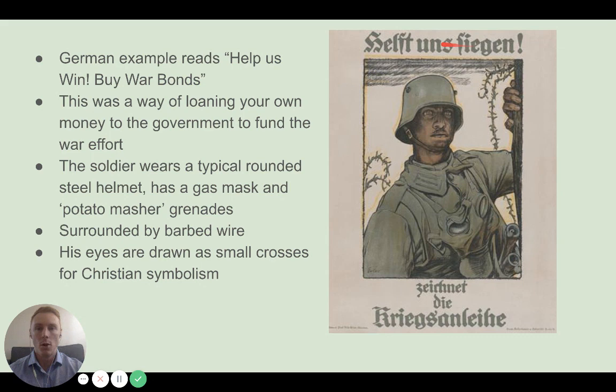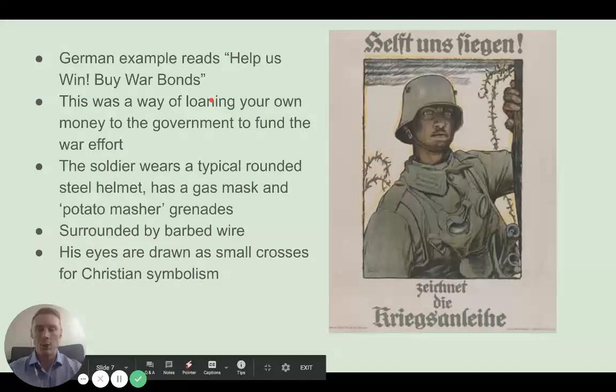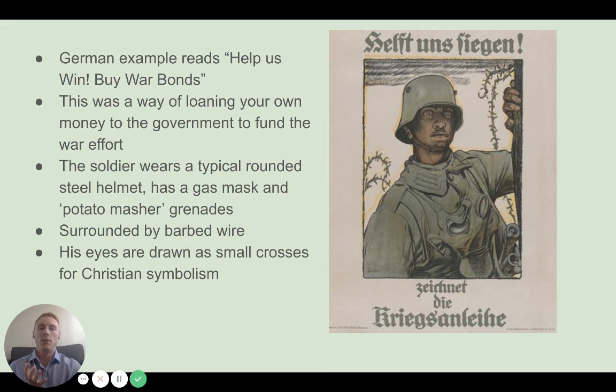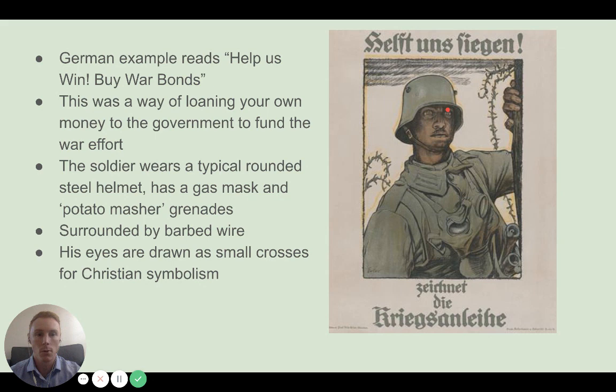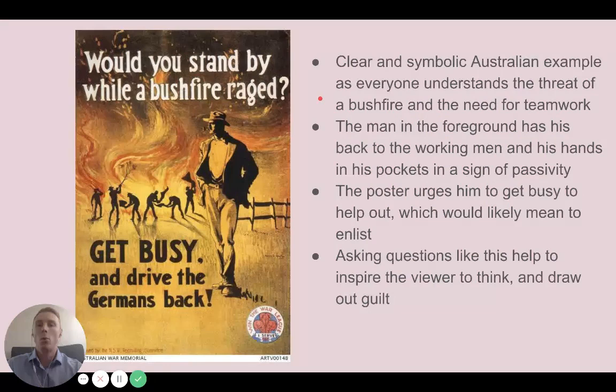This is a German example. It says in German 'Help us win — buy war bonds,' encouraging people to loan money to the government to fund the war. The soldier wears the typical German rounded steel helmet of the time, has a gas mask on his front and potato-masher grenades, and is surrounded by barbed wire. Notably, if you zoom in, his eyes are drawn as tiny crosses, adding Christian symbolism.